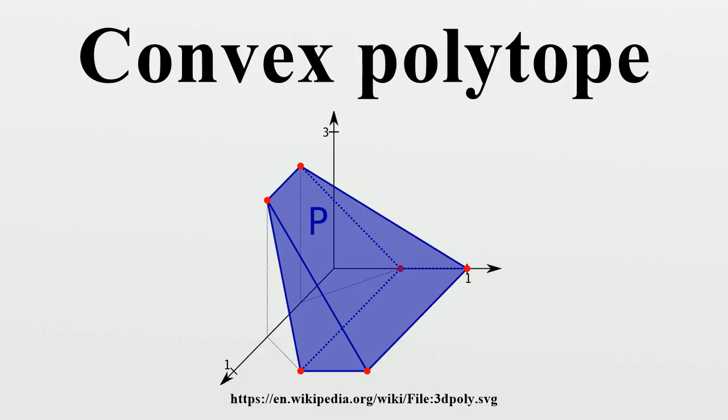Special cases of an unbounded convex polytope are a slab between two parallel hyperplanes, a wedge defined by two non-parallel half-spaces, a polyhedral cylinder, and a polyhedral cone defined by three or more half-spaces passing through a common point.